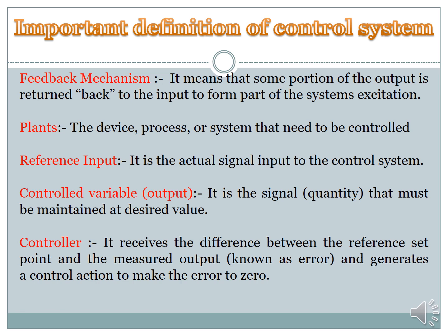Reference input is the signal input to the control system. Controlled variable is basically the output — it is the signal that must be maintained at a desired value. The last one is the controller. The controller receives the difference between the reference input and the measured output, and generates a control action based on that comparison. A comparator compares the two values — the reference input and the measured output — and based on that, the plant starts working.